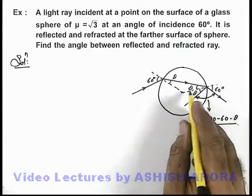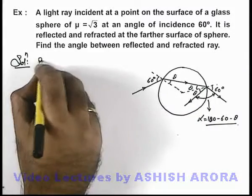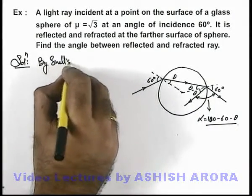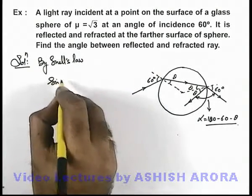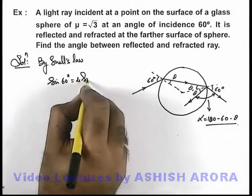To find the value of θ, we can use Snell's law. By Snell's law, we use sin 60° = μ sin θ.